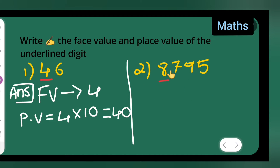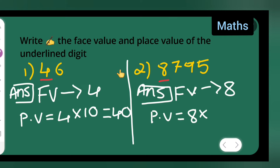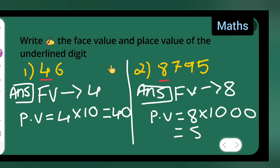For the second number, the face value will be 8. And the place value will be 8 multiplied by 1000 — ones, tens, hundreds, thousands — so 8 multiplied by 1000. The answer is 8000.